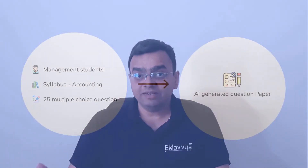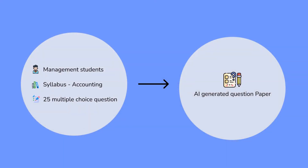For example, if you want to conduct an academic exam for management students with a syllabus covering accounting, and it should include 25 multiple choice questions to be completed in 30 minutes, you can provide such input to the AI question bank generation tool. It will then automatically generate a question paper on accounting tailored for management students.